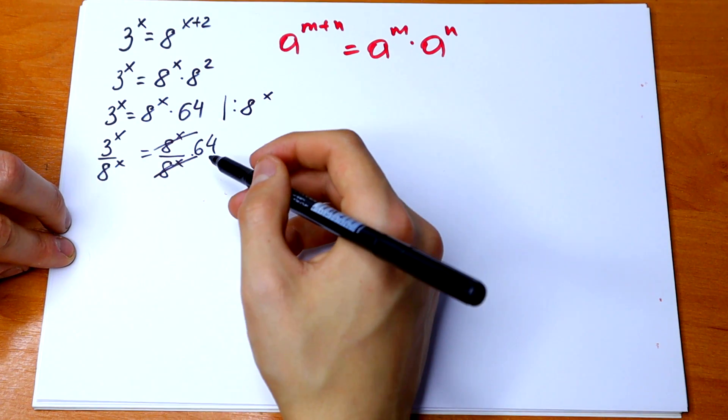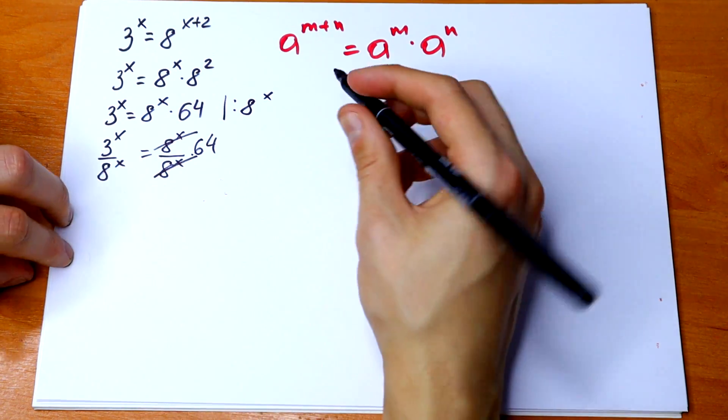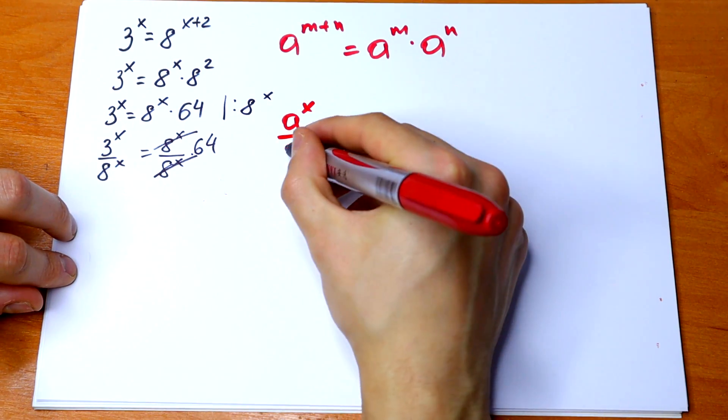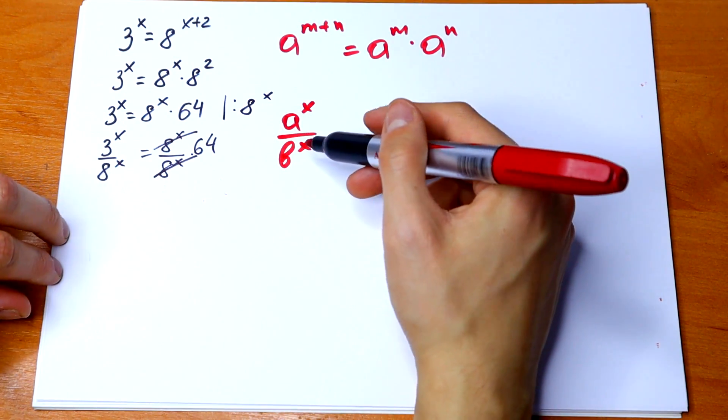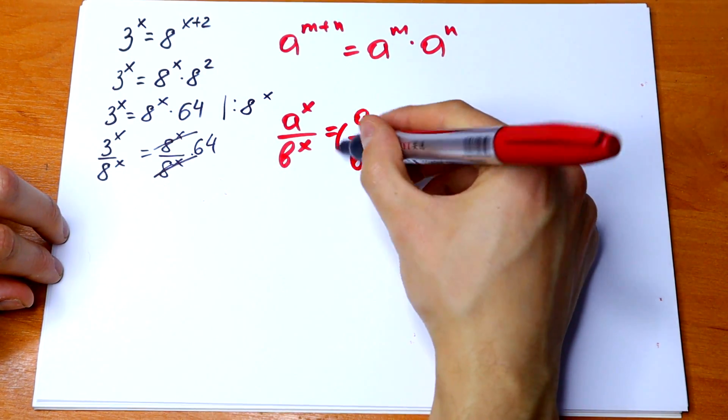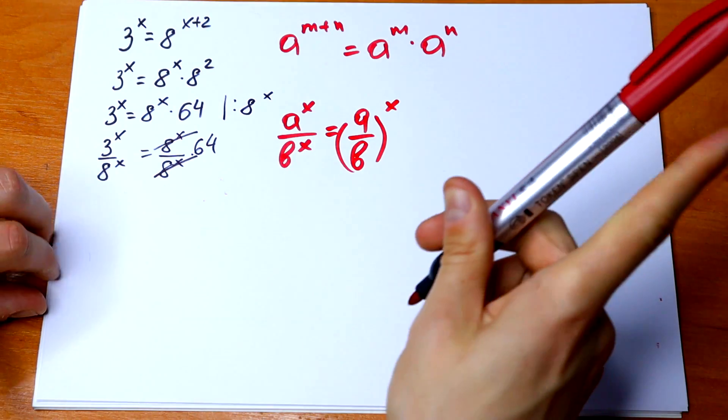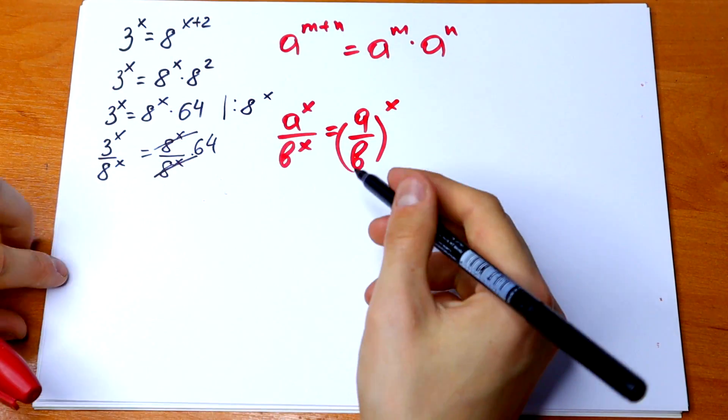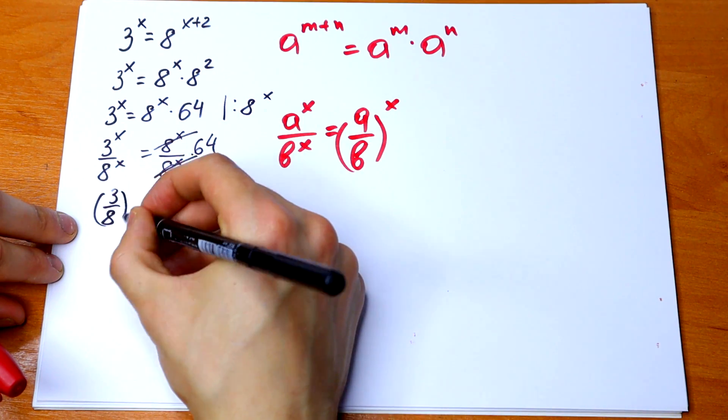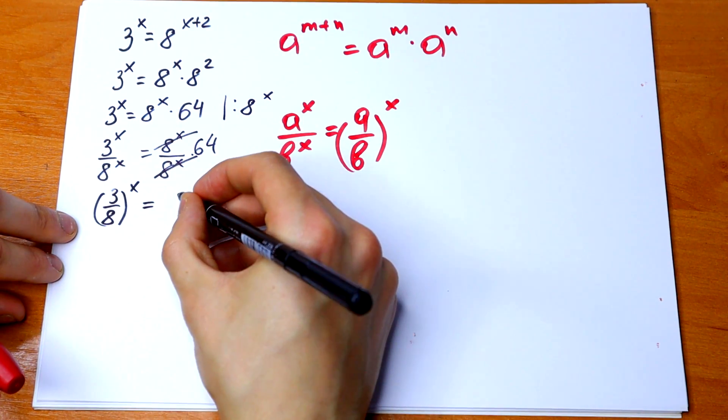And this we can write in one parenthesis because we know if we have a to the power x over b to the power x, so if we have different bases but same exponent, we can write it as a over b all raised to the power x. This rule is really good for us because we can write this as 3 over 8 to the power x equals 64.